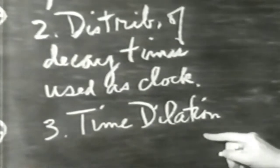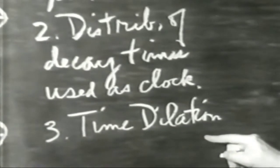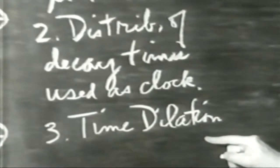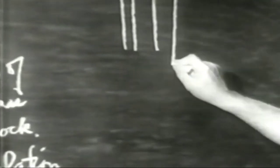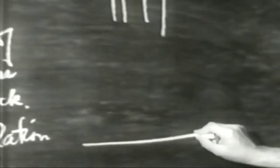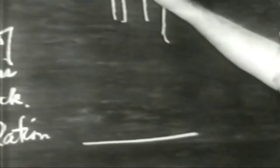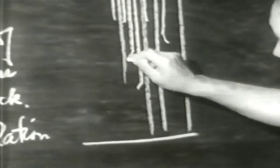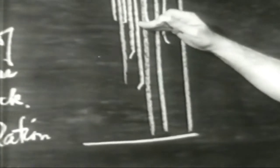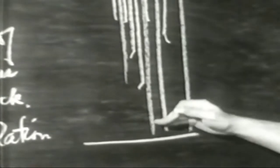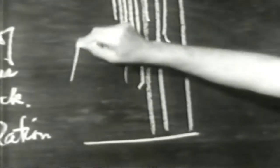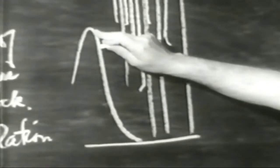Confronteremo due misure dello stesso intervallo di tempo: quella fatta con i mesoni che vanno velocissimi rispetto a noi e quella fatta con i mesoni fermi rispetto a noi. I mesoni mu che adopereremo sono prodotti nell'alta atmosfera e vengono giù veloci verso la terra. Mentre vengono giù, alcuni di essi si disintegrano in volo. Noi ci troviamo in cima a una montagna, il monte Washington nel New Hampshire.